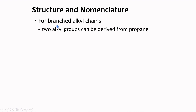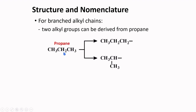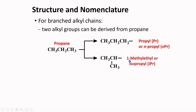It is entirely possible to have branched alkyl chains. Starting from propane, there are two alkyl groups that can be obtained. Removing a proton at a terminal position gives propyl or n-propyl. Removing a proton at the internal position gives 1-methylethyl, more commonly called isopropyl. It is called 1-methylethyl because the carbon attached to the parent is position 1; the two-carbon portion is the ethyl group, with the methyl attached at carbon 1.